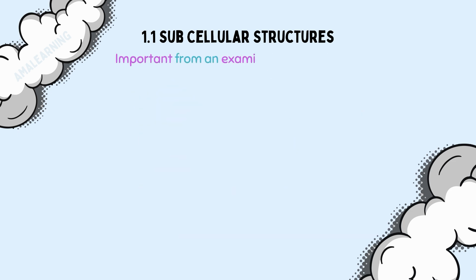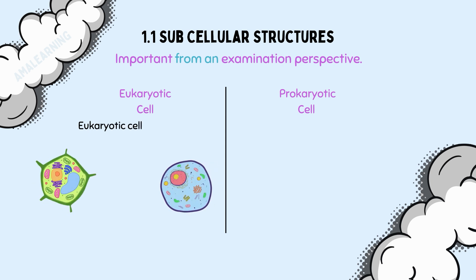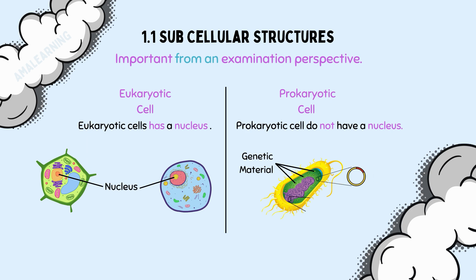From an examination perspective, it is important that you know the following: a eukaryotic cell has a nucleus, whereas a prokaryotic cell has genetic material that floats around in the cytoplasm — in other words, not within the nucleus. The prokaryotic cell usually has a plasmid and a chromosomal loop of DNA.